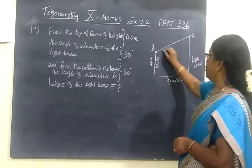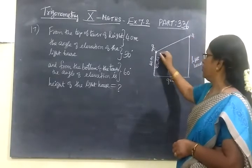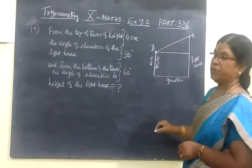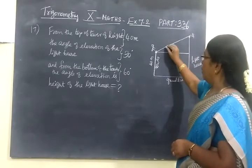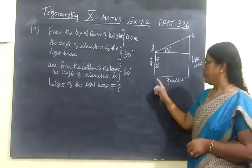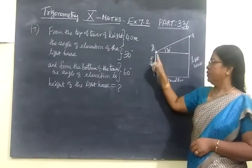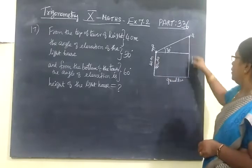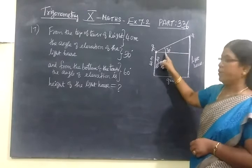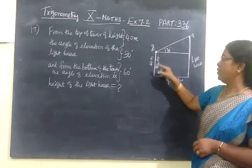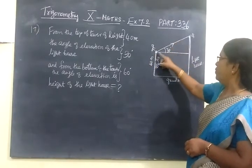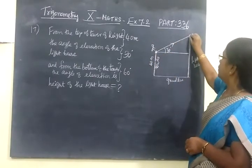He is observing from the top of the lighthouse. And he is drawing the ground level parallel to this. The angle of elevation is 30 degrees. This is the tower — a man is sitting here and observing the lighthouse with the angle of elevation 30 degrees. So the first part is over. The dark line is not needed because it is the angle of elevation from here to here.